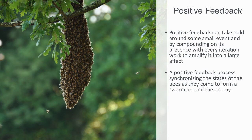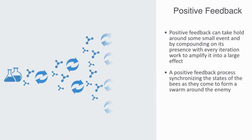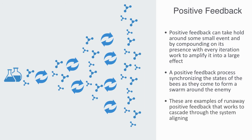Similarly, positive feedback through pheromone excretion is present in the formation of patterns within ant colonies. Another example would be any form of autocatalytic chemical process. A single chemical reaction is said to have undergone autocatalysis if one of the reaction products is also a reactant, and therefore a catalyst in the same or coupled reaction. The more reactions we get, the more catalysts we'll have, which will then generate more reactions and so on. These are examples of runaway positive feedback that works to cascade through the system, aligning all the elements into some coordinated regime.